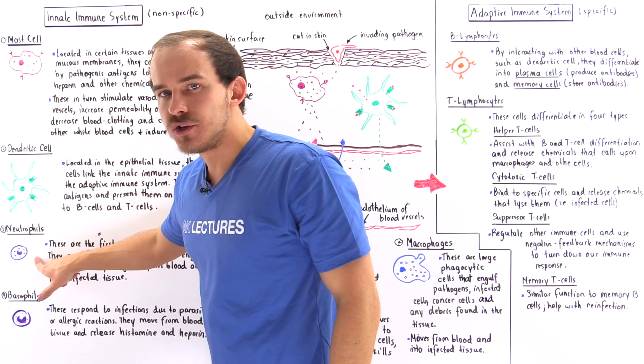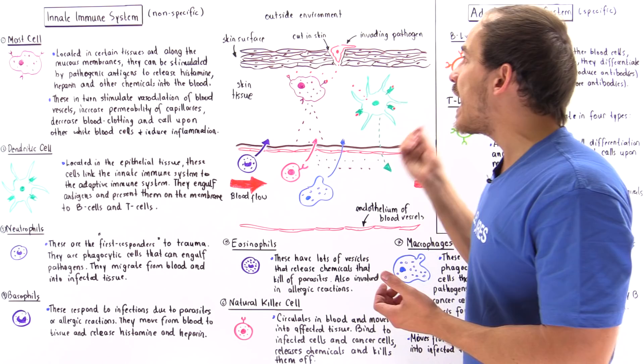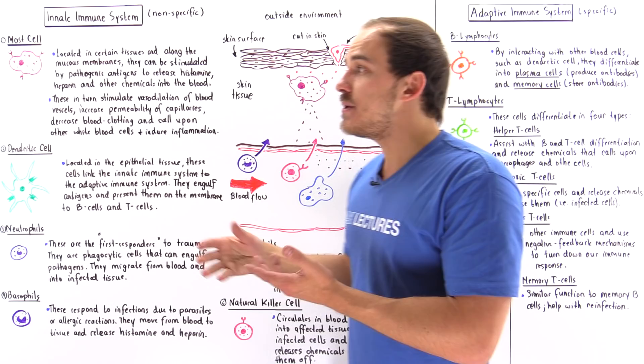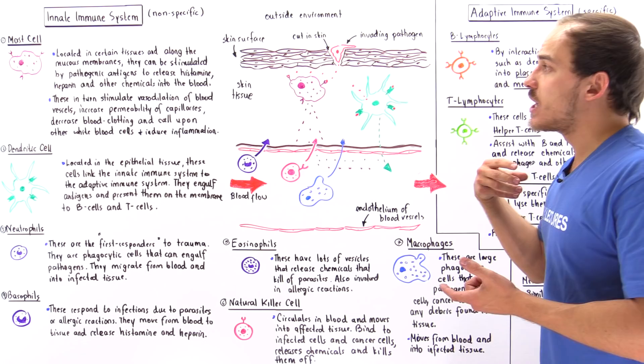Neutrophils are phagocytic cells. When they move into our skin tissue, they begin to engulf pathogens. These pathogens could be bacterial cells. They can also be viral agents, in which case viruses infect our cells, and neutrophils can engulf those cells that have been infected by the virus.